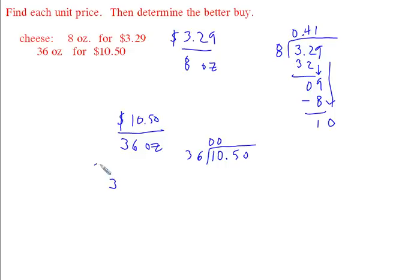It doesn't even go in three times. So it goes in two times. And surprisingly enough, we already have our answers to which is the best buy. Because check it out. This is 20 something cents per ounce, and that's 41 cents per ounce.